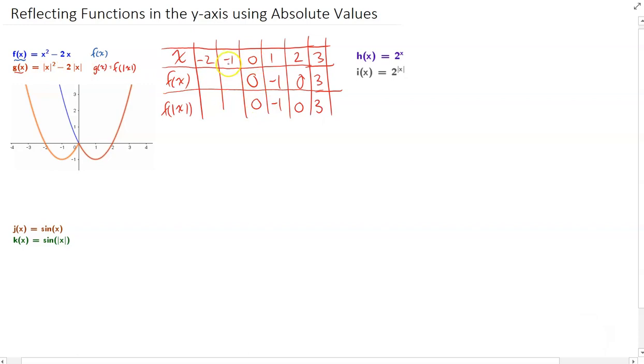Now, what about the negative 1? Well, if I sub negative 1 into all these absolute values here and here, I get positive 1, positive 1, positive 1. So I'll get that value, which means that when I sub that into that, I would get that value.